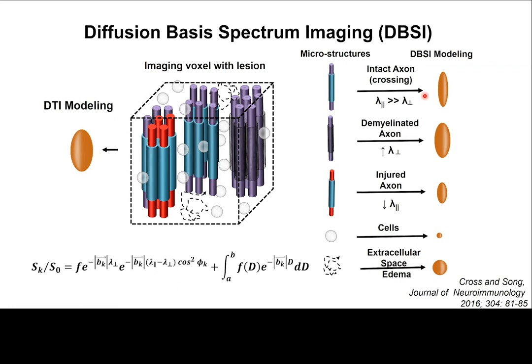For example, we can model intact axons versus demyelinated axons, which increase axial diffusivity because the compartment is much larger. With injured axons, we can model shorter axial diffusivity. In cells, there is more restricted diffusion. And with edema or extracellular interaxonal space, diffusion will be isotropic with larger diffusivities.